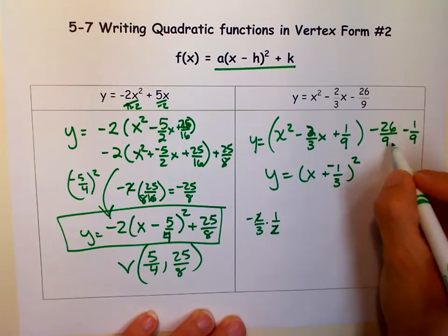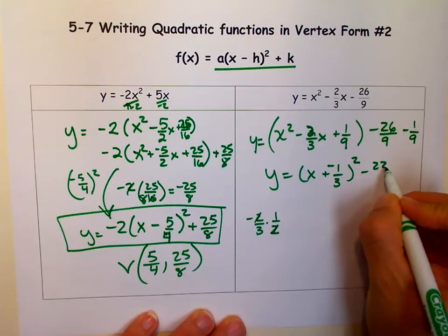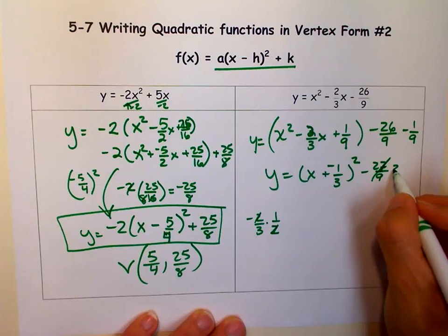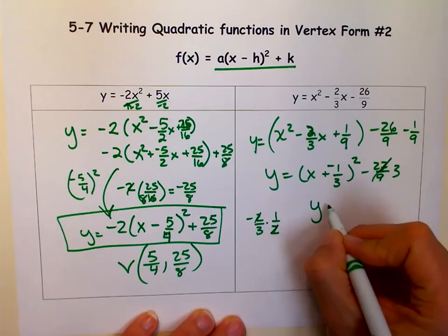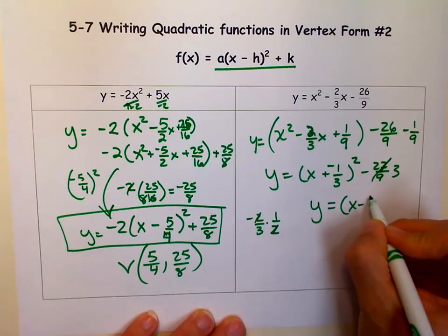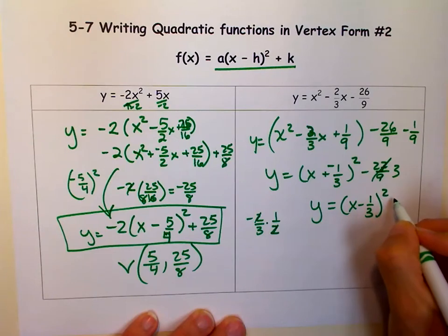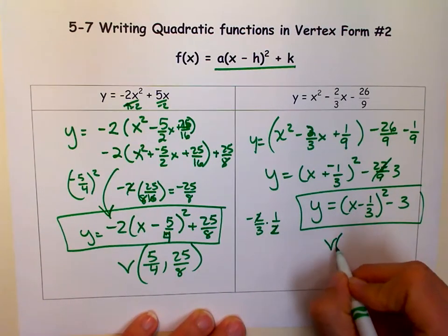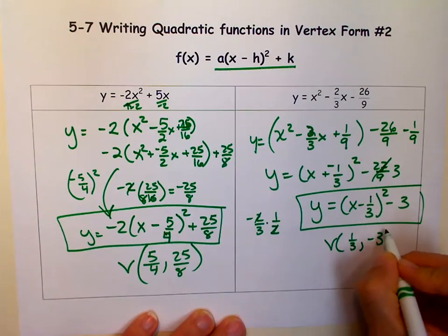And then when we combine these, there is a common denominator. So I get 27 ninths. And 27 ninths actually reduces to 3. So my vertex form is x minus 1 third squared minus 3. And the actual vertex would be 1 third comma negative 3.